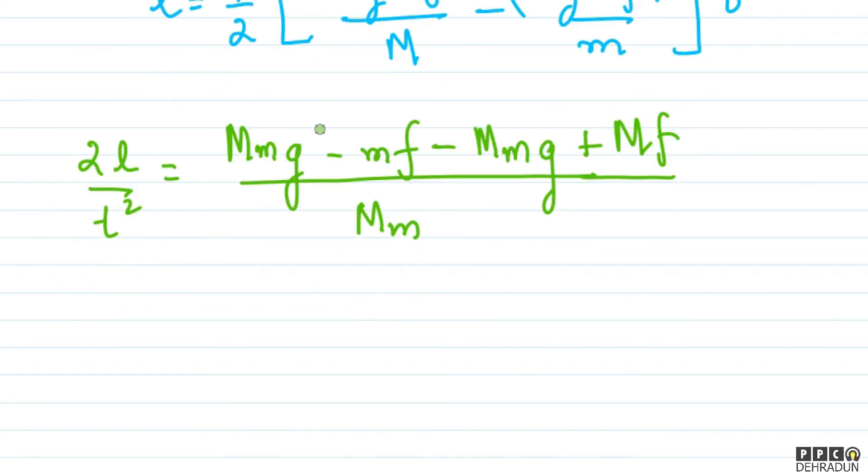So see, now whose value will come - friction's value will come. So friction's value, see, very easily, here it's coming as 2m small m into l upon t squared, and we'll divide this by capital M minus small m. So see, this is our final answer.